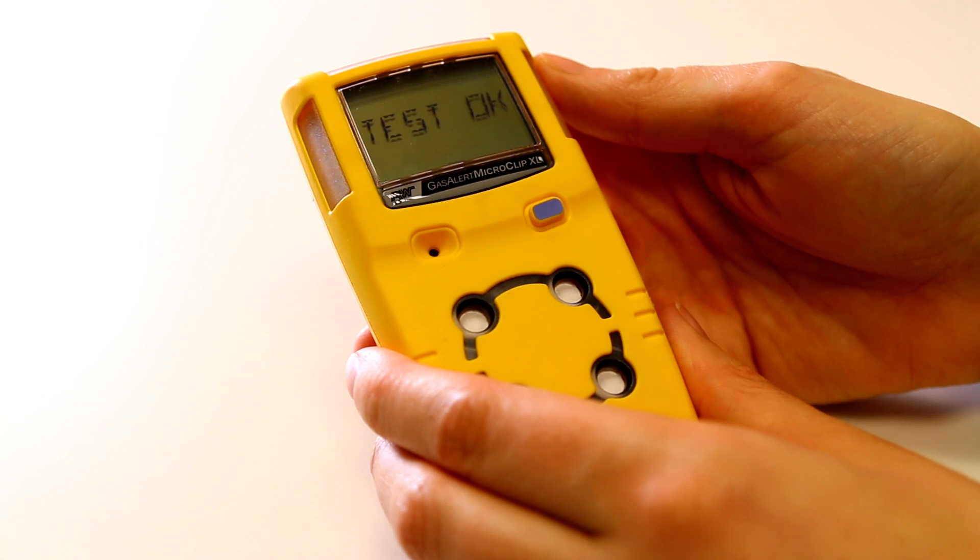During the self checks you'll be able to see a cal juice screen. This will show you how many days are left until the next calibration is required.